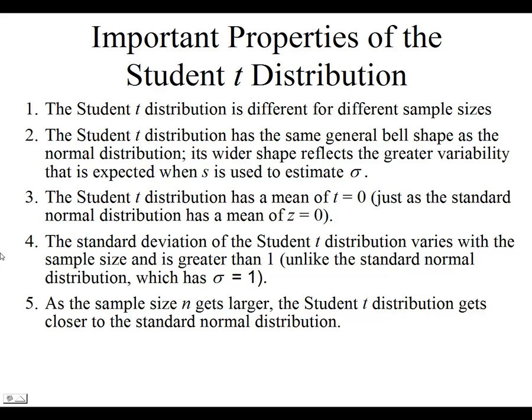To deal with confidence intervals where we have less than 30 data points, we can't use a z-distribution, so we're going to use the t-distribution, which is very similar in nature.